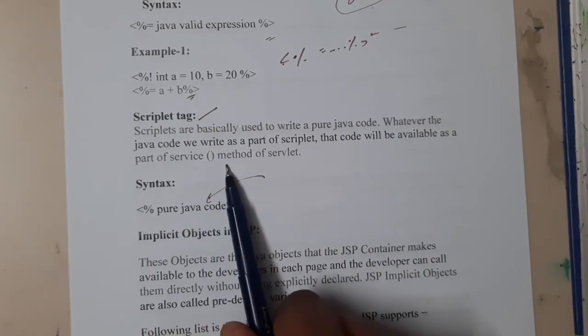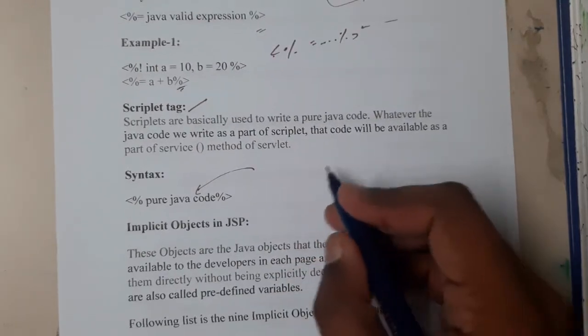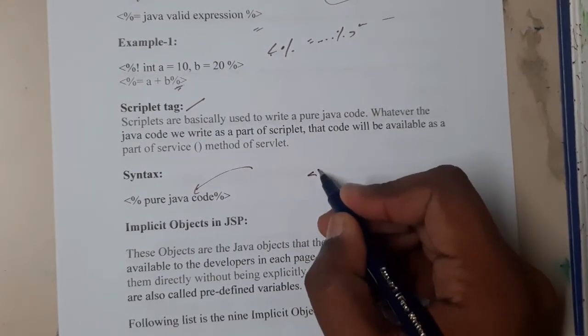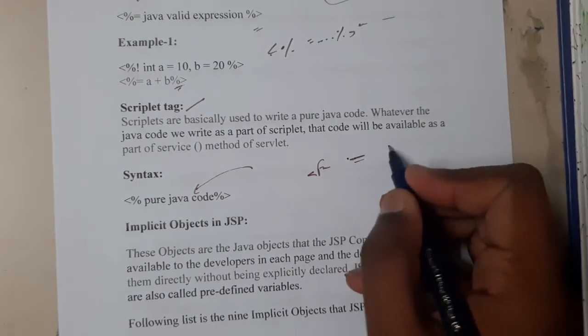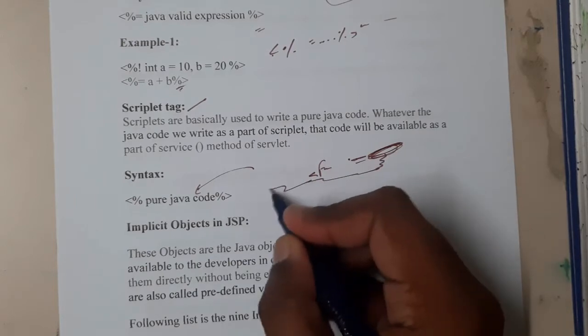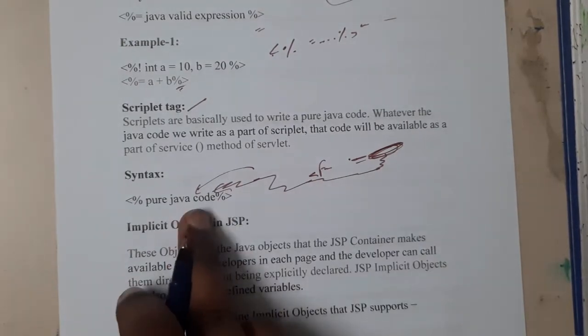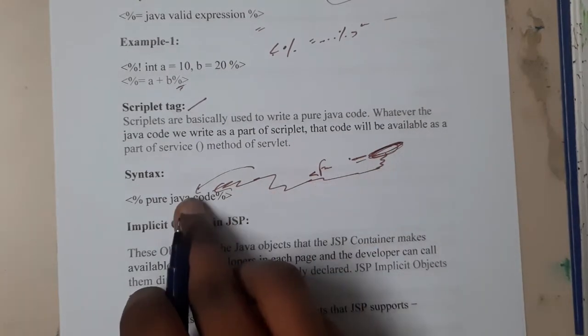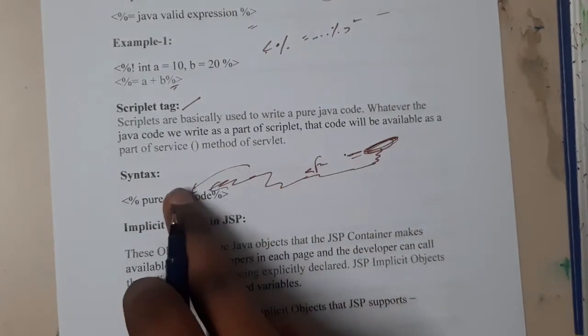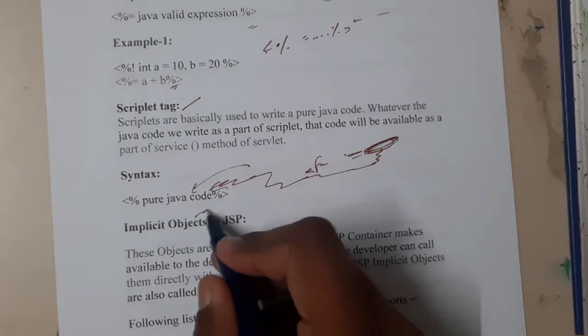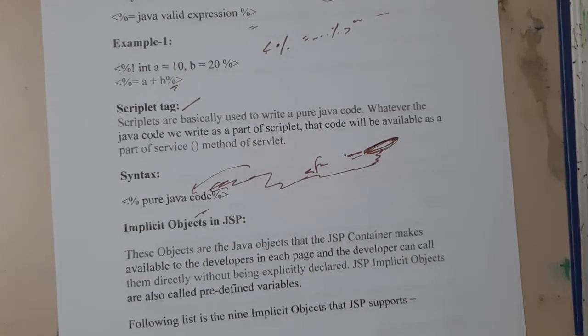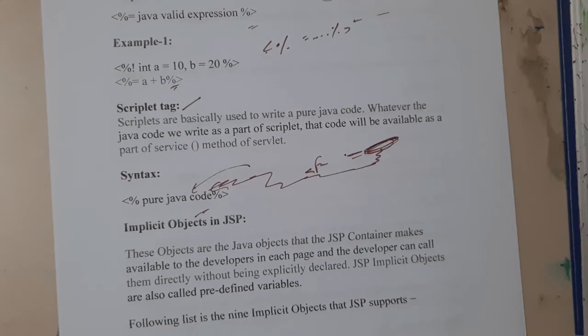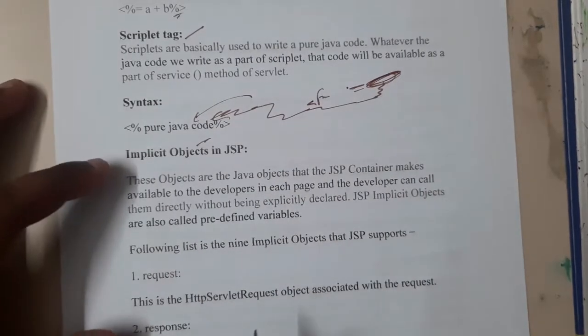When you are writing in HTML inside forms, you will be making action. In action, you will be writing the servlet name. This servlet name will automatically execute this. The code will be written here, so whenever that action is done, automatically this whole code will be executed. That is the reason why it is called pure Java code.